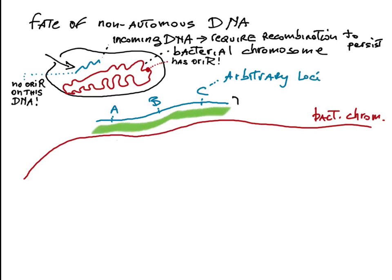Efficient recombination requires homology, that is, the presence in the recipient of DNA that has similar or identical sequence to the incoming DNA. For example, there are close or identical counterpart loci A', B', and C' on the bacterial chromosome. When such homology is present, homologous recombination can rescue the incoming DNA.